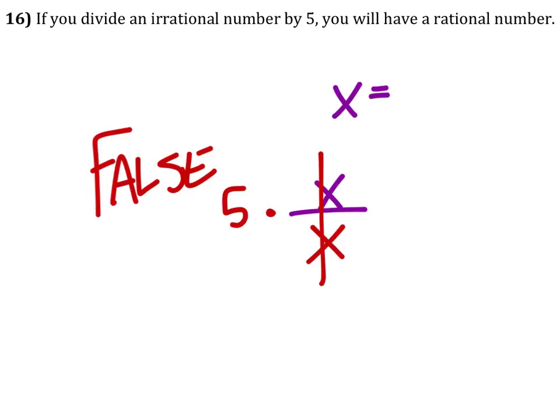Alright, I did not explain specifically what an irrational number is. An irrational number is a number with a decimal that will never repeat or terminate. Because once it terminates or repeats, it becomes a rational number.